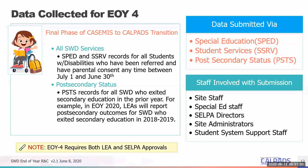In the top right corner, you can see the different file types that are required at a minimum. Below that are the staff we imagine would be involved: the special education staff, your SELPA directors, your administrators, and student system support staff. That's because although data specific to students with disabilities programs and services comes from the SED system, the rest of the student profile comes from the SIS.